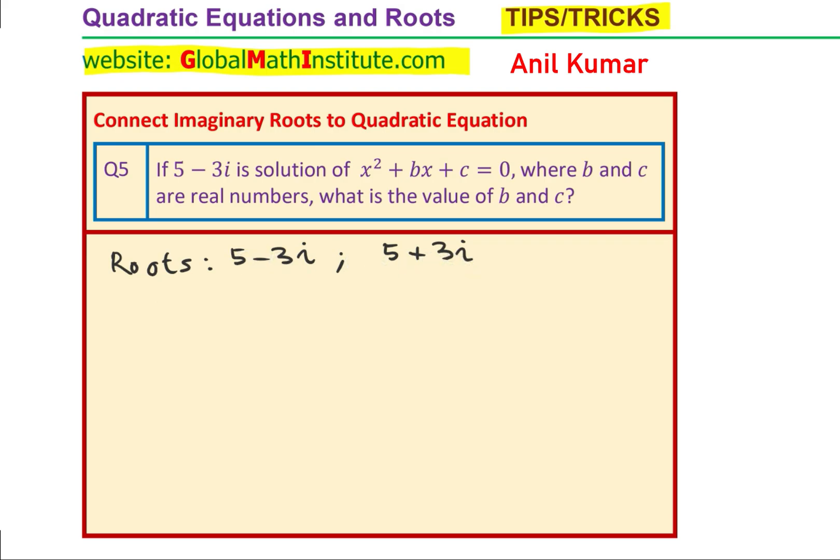Now, if these are the roots, to find this quadratic equation, we will have to do x minus 5 minus 3i times x minus 5 plus 3i equals to 0. And after that, we need to expand and simplify. Once you expand, simplify, you can compare the coefficients and get your answer. So, it is a very lengthy procedure.